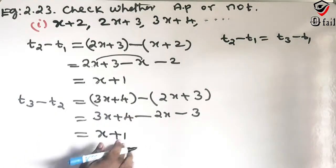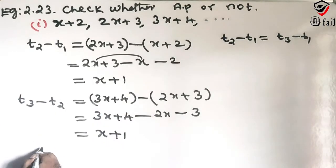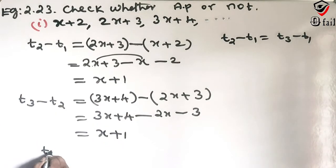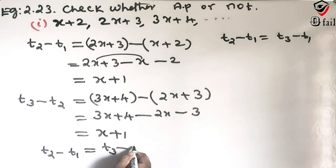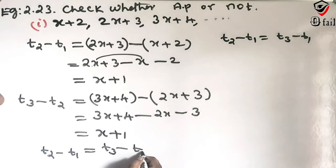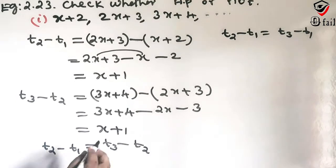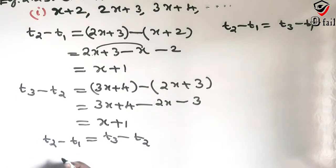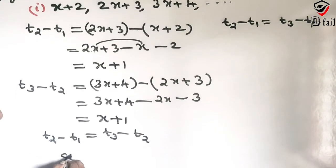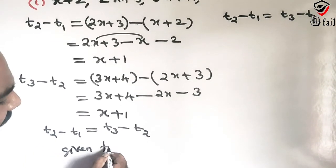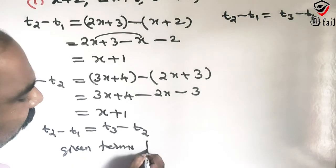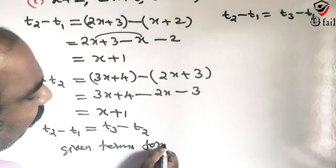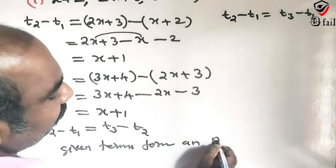It is equal — T2 minus T1 equal to T3 minus T2. Therefore, the given terms form an AP.